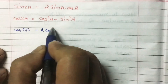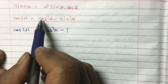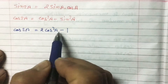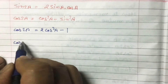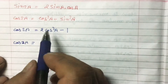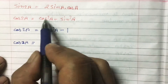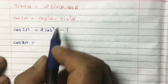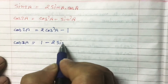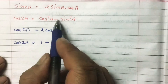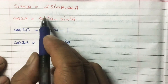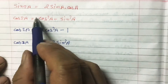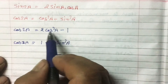You get the formula 2cos²A - 1. That is cos 2A in terms of cos. Similarly, another formula: cos 2A = 1 - 2sin²A. To get this, remove cos and put 1 in front of sin²A with a coefficient of 2. So cos 2A equals 1 minus 2sin²A is the formula of cos 2A in terms of sin.